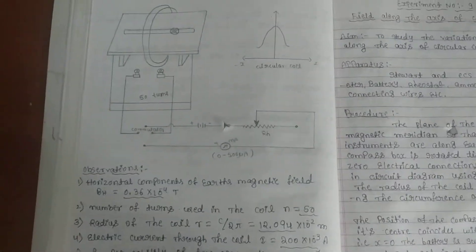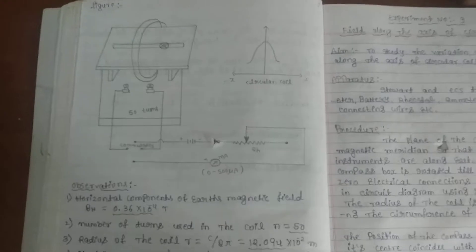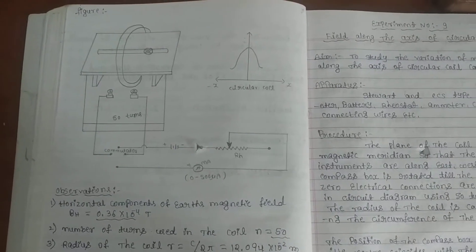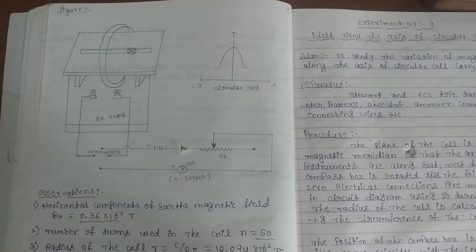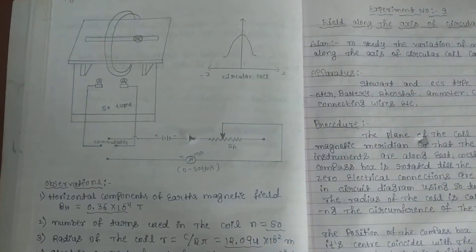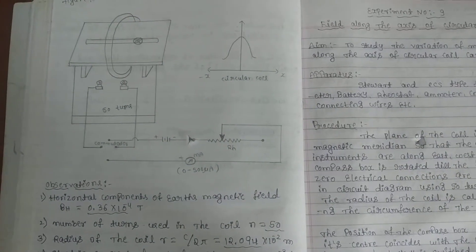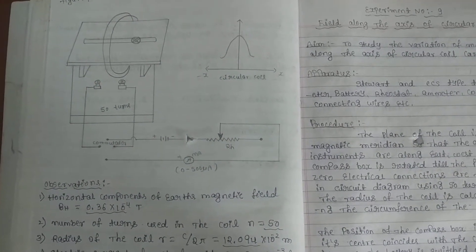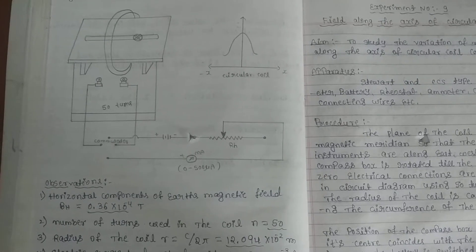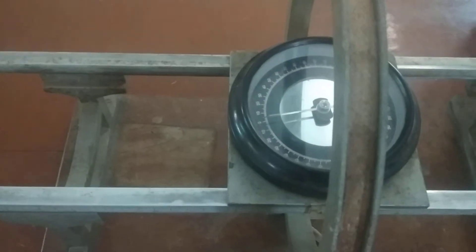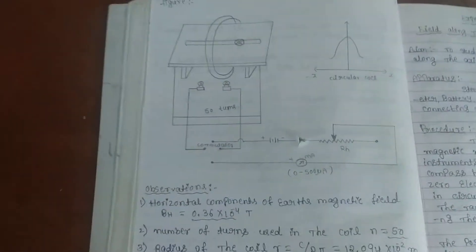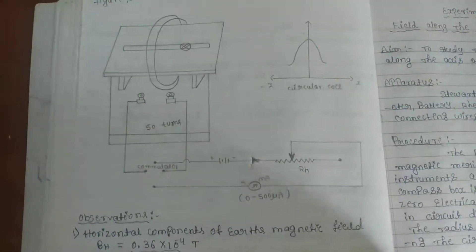You can observe the diagram here — the circuit diagram is given here and the connections are made as per the circuit diagram shown. Here these are the apparatus: this is the tangent galvanometer, here is the commutator key, a battery, and a rheostat. Initially the connections are made like this.